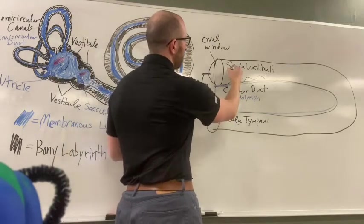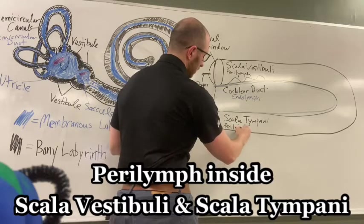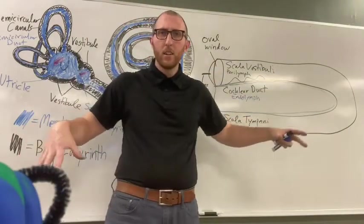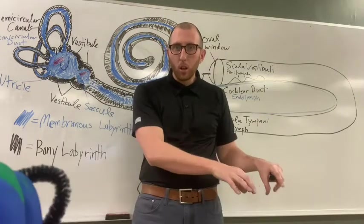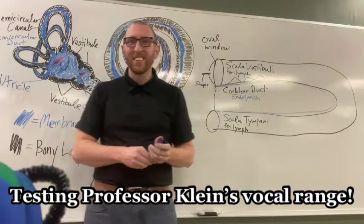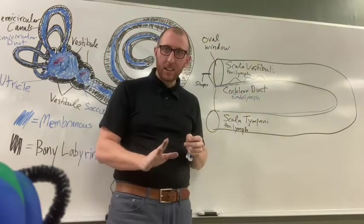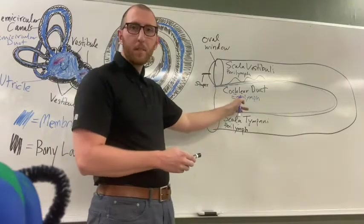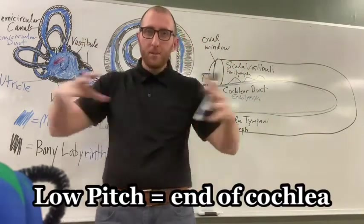Think of it like a piano: the low keys are low pitch and the high keys are high pitch. The first part of the cochlea detects high pitch, and it gets lower and lower as you get to the end of the cochlea. Remember it's a spiral, but I've unwound it here so you can see it flat.